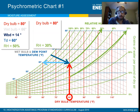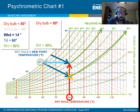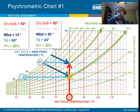If you follow it up along the gray wet bulb lines, the wet bulb is about 60 degrees. The dew point is straight across to the left, so it's about 44 degrees. Our wet bulb depression is 20.